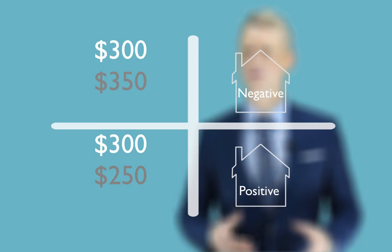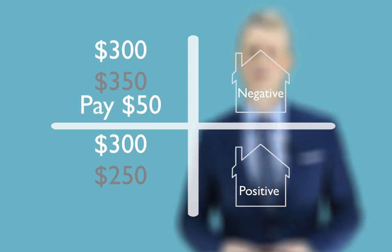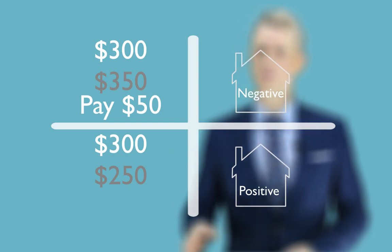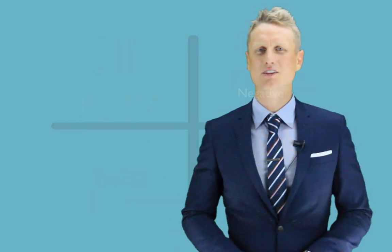The reason for this is the one on the top actually requires you to reach into your pocket and pay $50 to make up the difference, where the one on the bottom actually produces an income of $50 a week. The most common question I get after that explanation is why would I invest in a negatively geared property if it loses money? Also a great question.